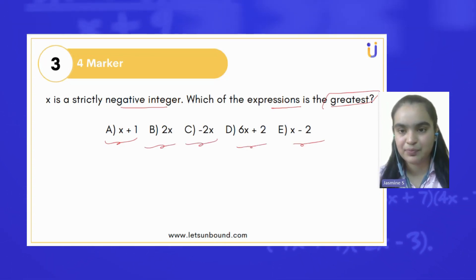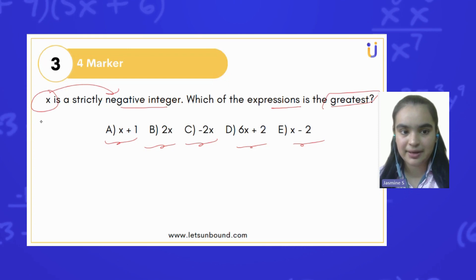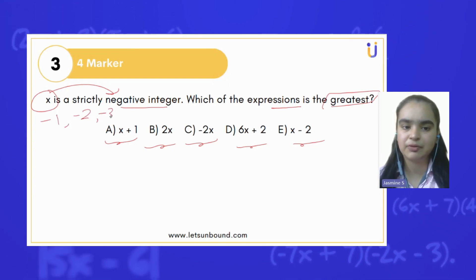This question is related to integers and the rules of integers that we have learned. Let's take one example. Since x is negative, it can be negative one, negative two, negative three, or any other whole or natural number.